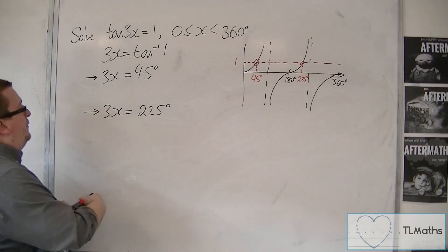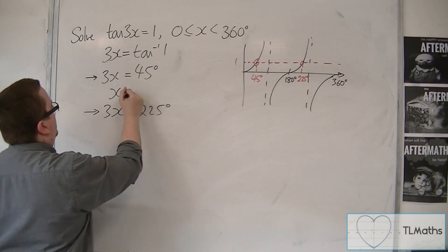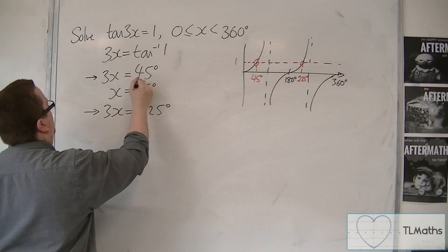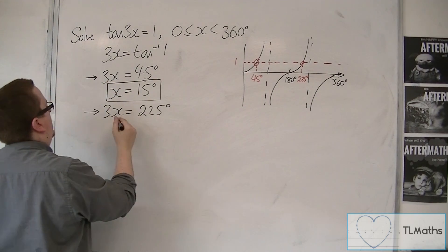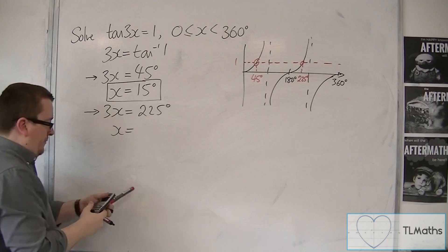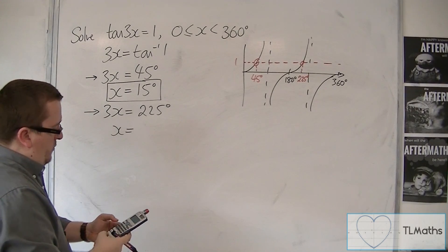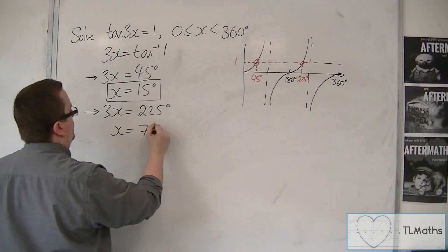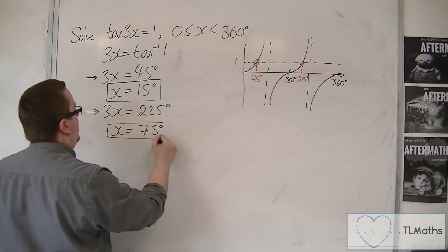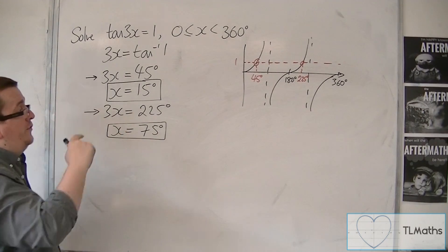We can now divide both sides by 3, and I'm going to get x = 15 degrees, and dividing 225 by 3 gets us 75 degrees. So they are two of the solutions,